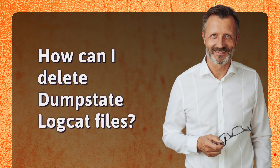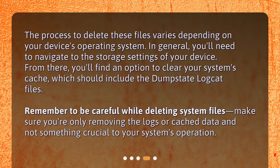How can I delete dumpstate logcat files? The process to delete these files varies depending on your device's operating system. In general, you'll need to navigate to the storage settings of your device. From there, you'll find an option to clear your system's cache, which should include the dumpstate logcat files. Remember to be careful while deleting system files — make sure you're only removing the logs or cached data and not something crucial to your system's operation.